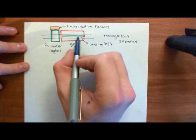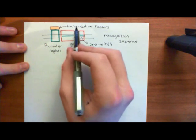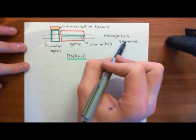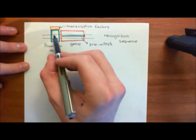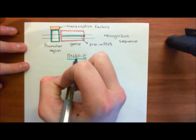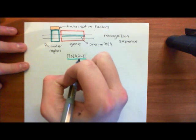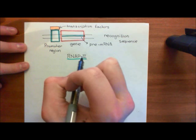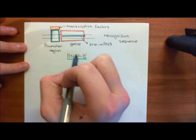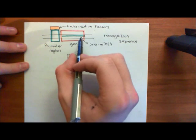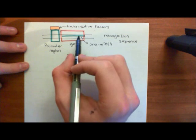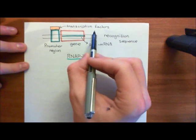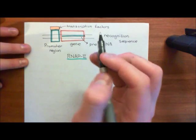Whereas in other cases, on other promoter regions, the same transcription factor binding to the same recognition sequence — but now in a different promoter region — can result in a decrease in the affinity of that promoter region for binding to RNA polymerase 2. Therefore, RNA polymerase 2 will bind to that promoter region less often, and you'll get less mRNA being produced for the downstream gene. The transcription factor has actually decreased the expression of that downstream gene.